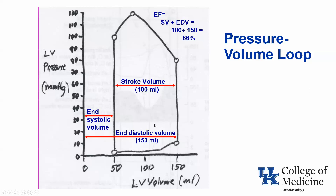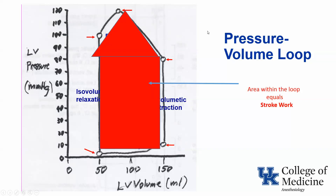We've used this pressure volume loop to reflect the volumes in the ventricle. The end diastolic volume in an average adult is about 150 cc's. The stroke volume is about 100 cc's, leaving about 50 cc's at end systole. The ejection fraction is the stroke volume divided by the end diastolic volume, which in this case is 100 cc's divided by 150, or 66 percent. The area inside the pressure volume loop equals stroke work.